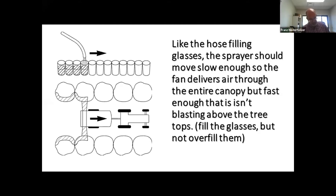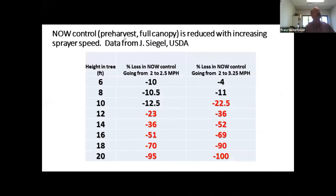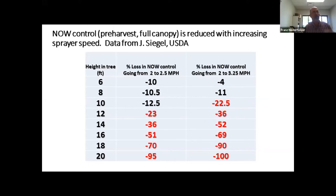The goal is to drive fast enough to move air straight through the canopy but not much further. Here's an example from Joel Siegel's data showing tree height versus percent loss in navel orange mite control when moving from 2 to 2.5 mph, and from 2 to 3.5 mph. As you move higher in the tree, you lose more control relative to what you'd get at 2 mph — because the faster you go, the less fan air reaches higher in the canopy, and you don't get the coverage or the protection. Most of the crop in unmanaged trees is from the middle up, and that's where coverage falls apart first when you drive too fast.